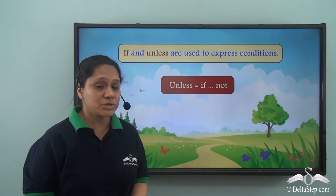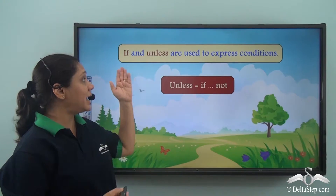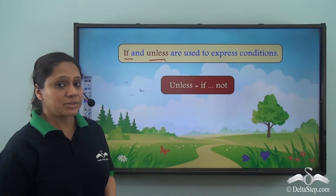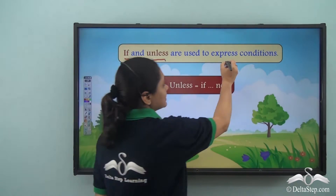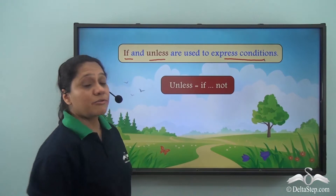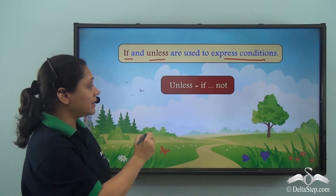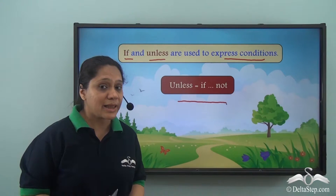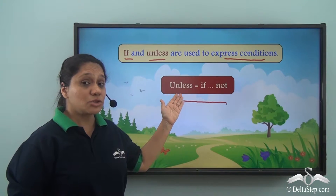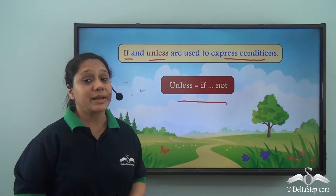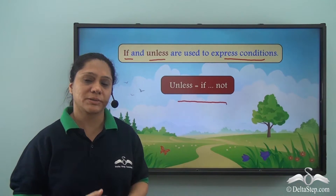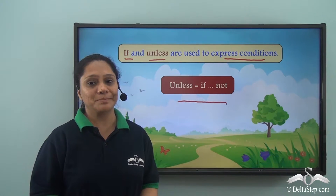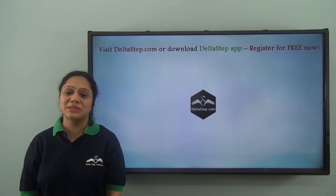So what did we learn today? We learnt that 'if' and 'unless' are two conjunctions used to express conditions. We also learnt that 'unless' is equal to 'if not' — they mean the same. 'Unless' is used in negative statements, in statements which have 'not.' There are many more conjunctions and we will soon learn about them.